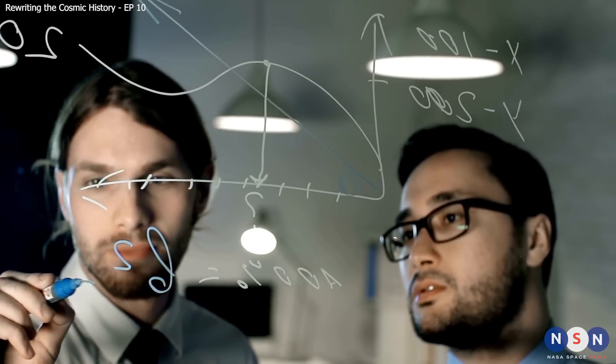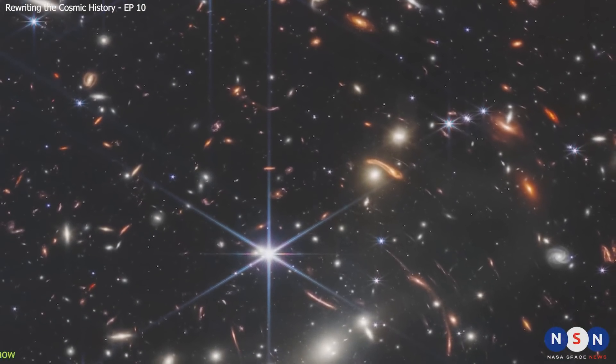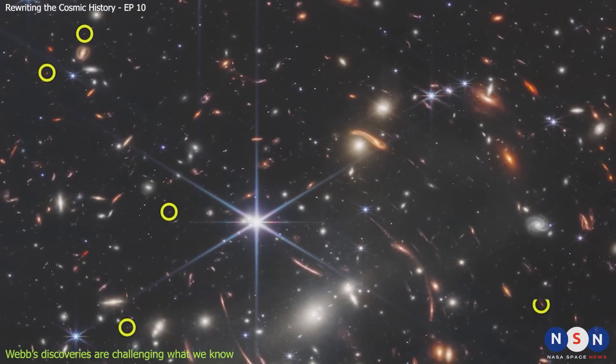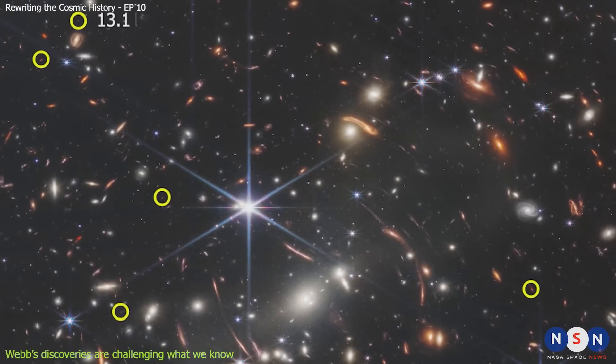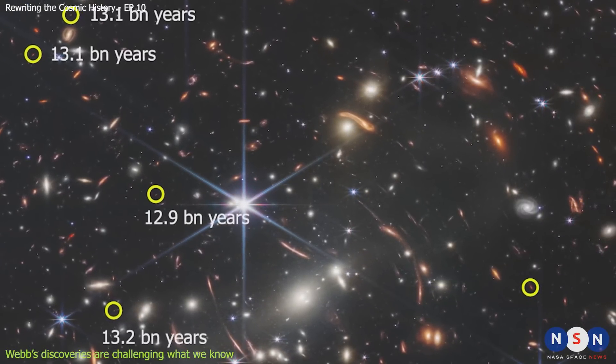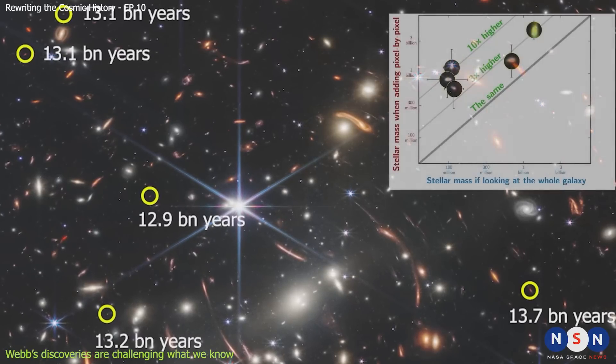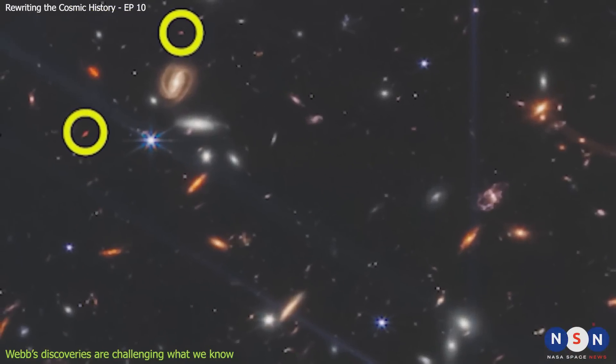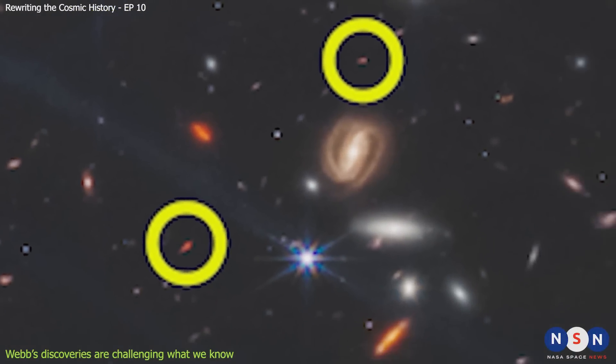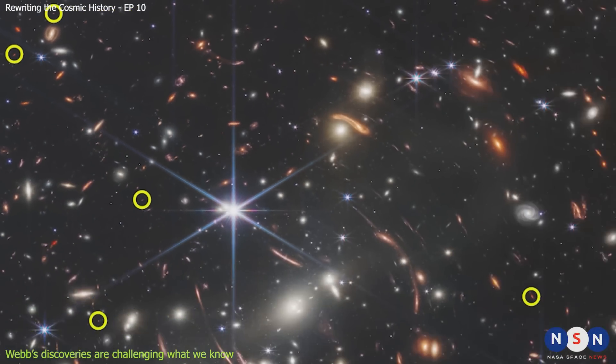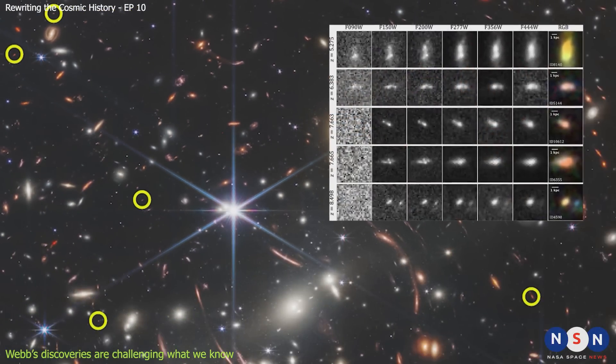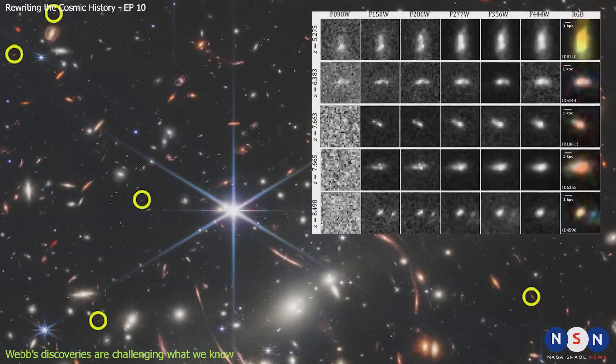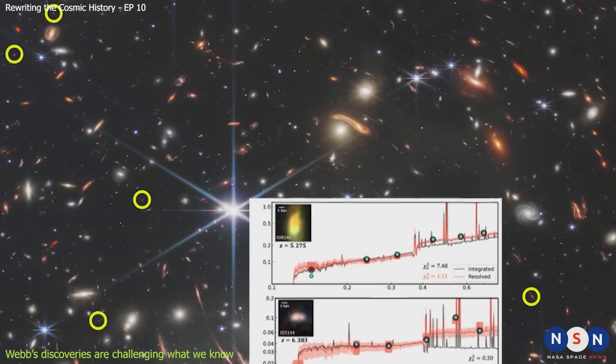For example, one of the recent discoveries that James made was a proto-cluster of five massive galaxies that are located at a distance of about 13 billion light years from us, which means that we see them as they were when the universe was only about half a billion years old. These galaxies are so massive that they contain about 10 billion stars each, and they are also very bright and emit a lot of ultraviolet radiation, which indicates that they are forming new stars at a very high rate. These galaxies are clustered together in a region that is about 3 million light years across, which is comparable to the size of our local group of galaxies. How did these galaxies form and grow so quickly and so close together?